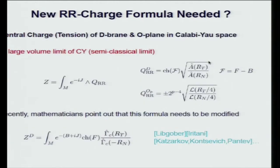Once you find the Ramond-Ramond charge of the D-brane and the orientifold plane, it seems quite straightforward to write down the central charge of these objects in Calabi-Yau space, at least in the large volume limit. This is a well-established, beautiful story, and people believed this was the end of the story.